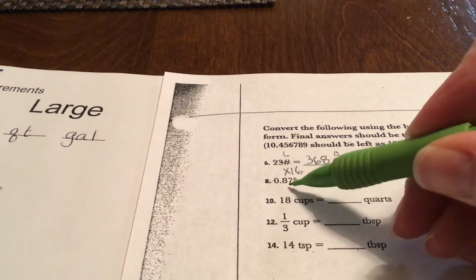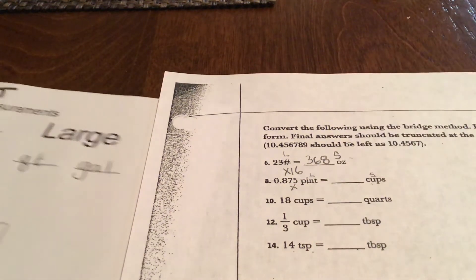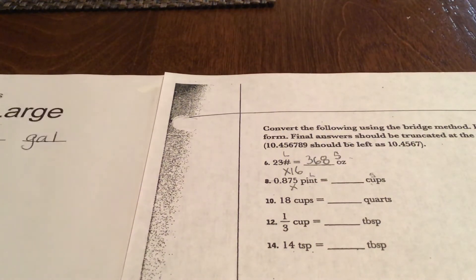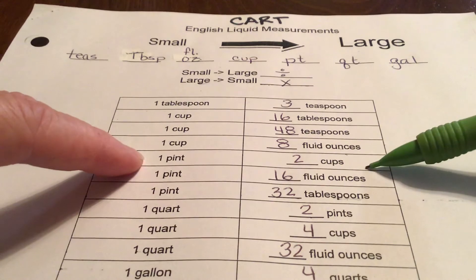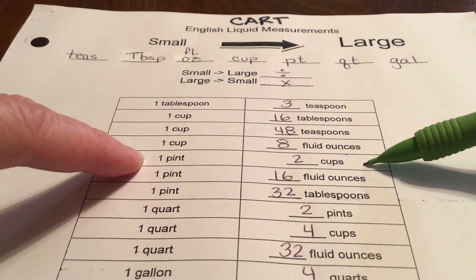And then that means that I'm going to multiply again. And for pints and cups, if you don't know the conversion factor, you're gonna come over here and find pints and cups on your chart. So the conversion factor is 2.